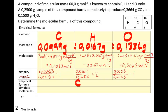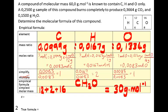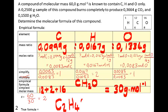Our ratio is C1H2O1, written as CH₂O. The simplest molar mass is 12 for carbon, plus 2 times 1 for hydrogen, plus 16 for oxygen, giving 30 grams per mole. But the true molar mass given is 60 grams per mole. Dividing the true molar mass by the simplest molar mass gives a factor of 2, meaning the true formula has twice as many atoms of each kind as the empirical formula. Therefore the true molecular formula is C₂H₄O₂.